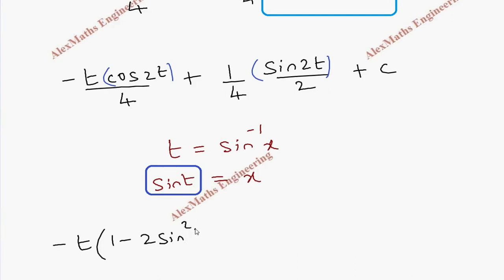Minus t cos 2t is 1 minus 2 sine square t, that is a trigonometric formula which we have used in previous videos. In the same way, 1 by 4 sin 2t is 2 sin t cos t divided by 2.